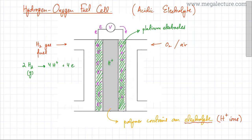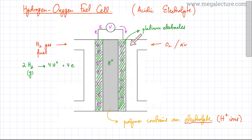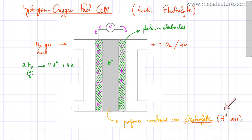On the right-hand electrode, oxygen or air is being pumped in. Air contains 21% oxygen — the rest is inert nitrogen. So air is pumped into the right-hand chamber and comes into contact with the platinum electrode. Remember, this electrolyte contains H⁺ ions, which came from the phosphoric acid added to the electrolyte. So this oxygen comes into contact with H⁺ ions and a reaction occurs.